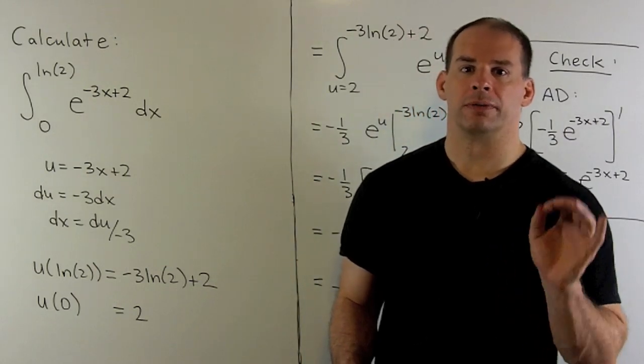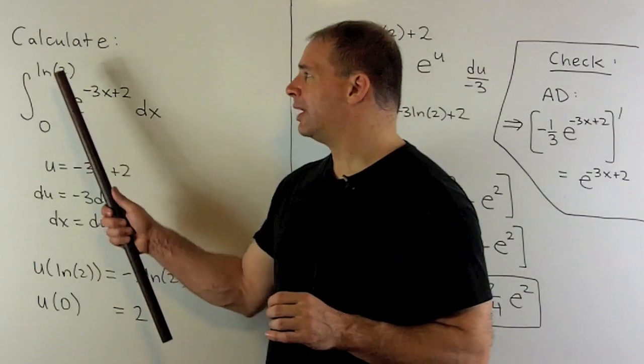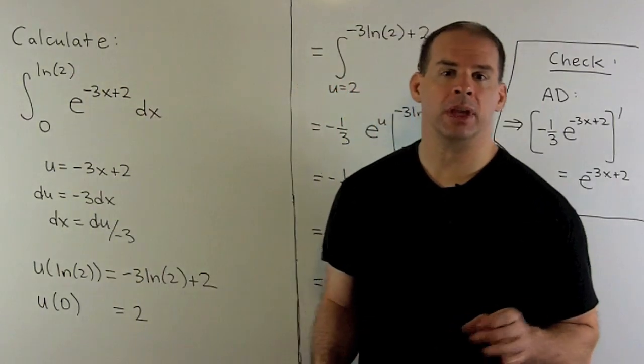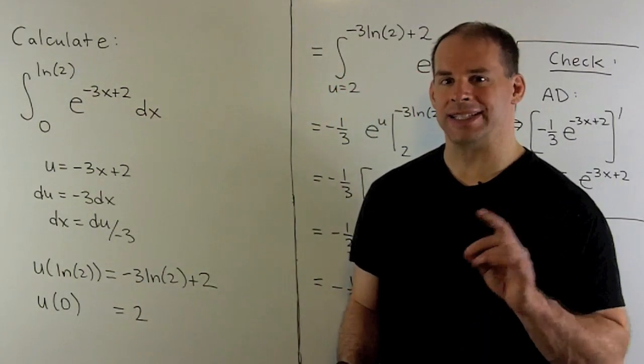Calculate the definite integral from x equals 0 to natural log of 2 of e to the minus 3x plus 2 dx.